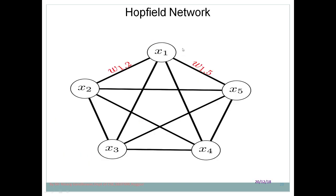Let me visualize this. Here we can see that each neuron is connected with every other neuron — it is a fully interconnected network. If you correlate this with networking topology concepts, there are various types such as bus topology, ring topology, and mesh topology. In mesh topology, all computers are connected with every other computer, and similarly, in the Hopfield network, all neurons are connected with each other.